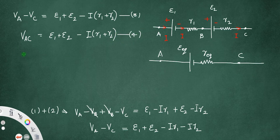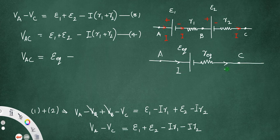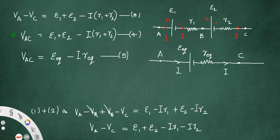Looking at the equivalent circuit, the potential difference between A and C is VAC equals E-equivalent minus I times R-equivalent, since we know terminal potential equals EMF minus I times internal resistance. Let us call this equation number 5.